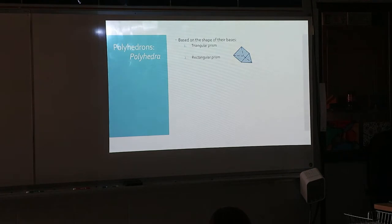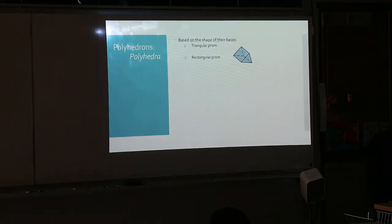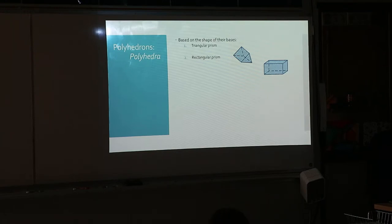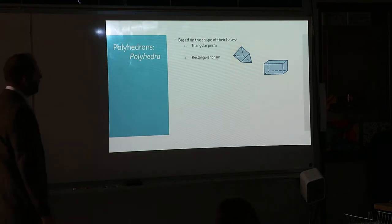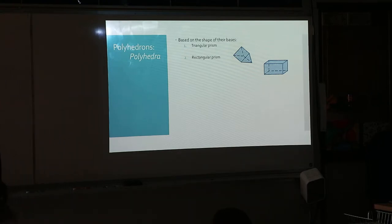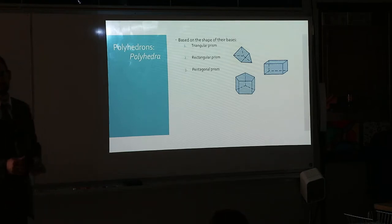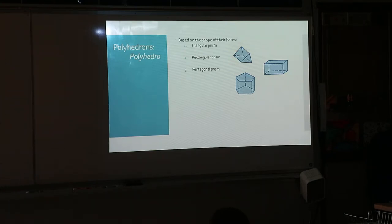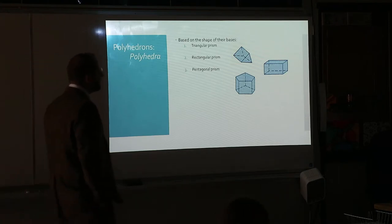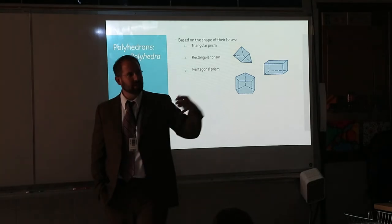A rectangular prism: the front and back, or bottom and top, are rectangles, and the other walls are rectangles as well. It's not a cube — it doesn't have to be a perfect hexahedron like we talked about yesterday. This is just a rectangular prism where the other walls are rectangles. Then we have a pentagonal prism — that was the one I showed you earlier. The top and bottom are pentagons, and the other walls are rectangles. Questions on the prisms themselves, like how you name them?